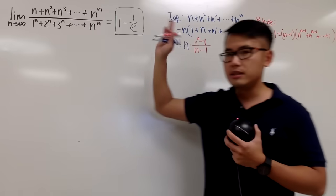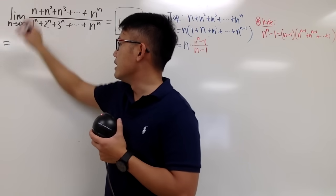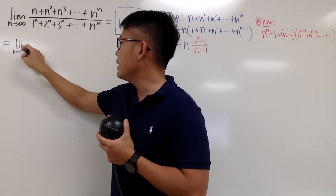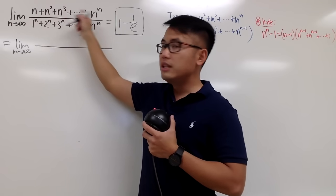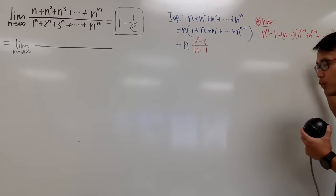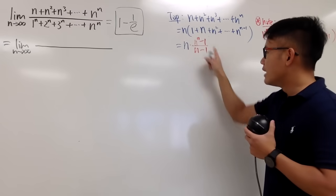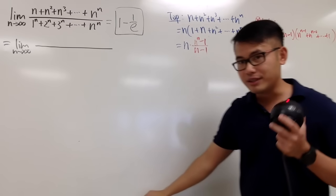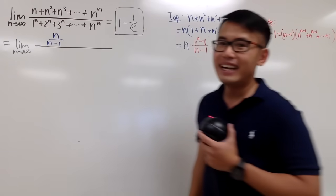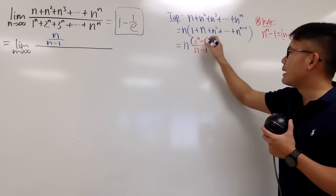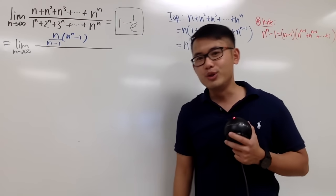Now I will write down the limit as n goes to infinity. For the top, notice that originally this was a series, but after all the algebra work we end up with n times n to the n minus 1 over n minus 1. I'll write this down as n over n minus 1, and you will see why in a minute. Then I will have to multiply by n to the n minus 1. So that's the whole numerator.